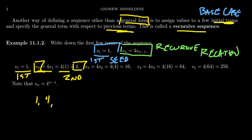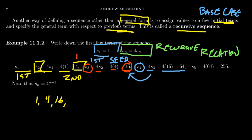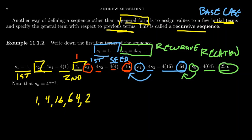For S3, we multiply four times the previous term S2, which is four, giving us four times four equals 16. So the third term is 16. For S4, we take four times S3, and four times 16 is 64. For S5, we take four times S4, and four times 64 is 256. We can keep going — each next term is always four times its predecessor.